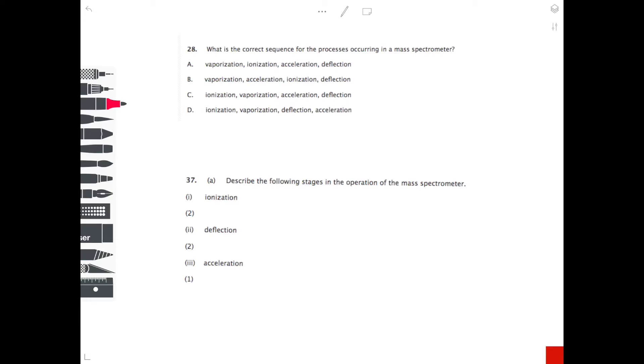And now I'm actually going to show you some past paper questions so you can actually see how you'll be asked this. So question number one: What is the correct sequence for the processes occurring in a mass spectrometer? You know me, I like to work out the answer before I scramble my brain by looking at the options. So what did I just say?